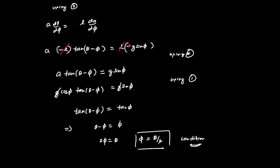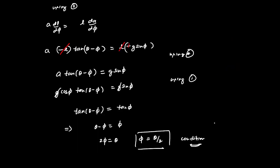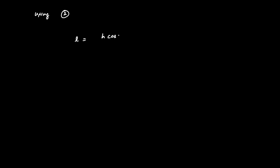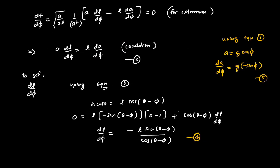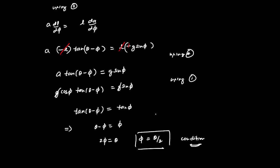Now that we know phi = θ/2 for the extremum (minimum time), we substitute into equation 2. From equation 2, L = h·cos(θ)/cos(θ - φ). Substituting φ = θ/2 gives L = h·cos(θ)/cos(θ/2) = h·cos(θ)·sec(θ/2). This is the required length for the shortest time.